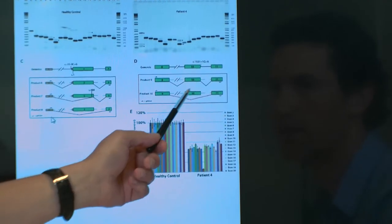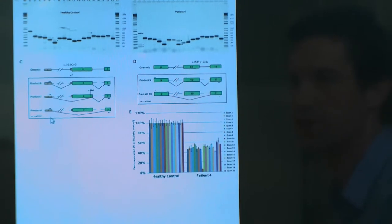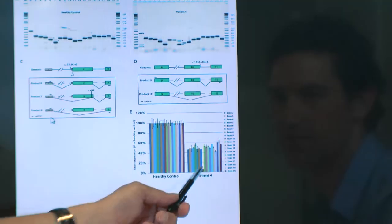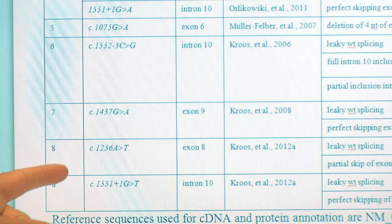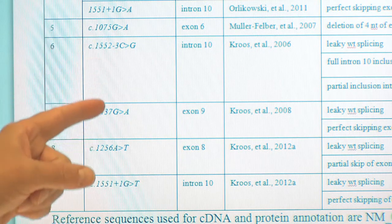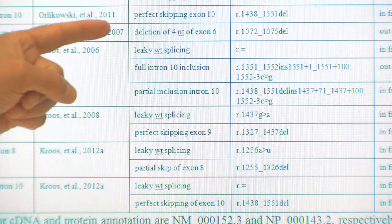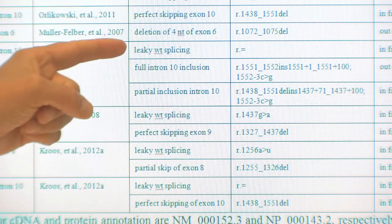We applied this method to patients with Pompe disease who had a partial or uncharacterized variant. Here you see a couple of those patients and here are the variants. For example, we detect several aberrant splicing events but also leaky wild type splicing.